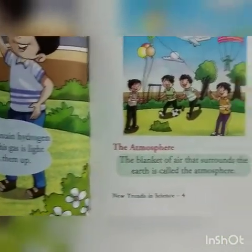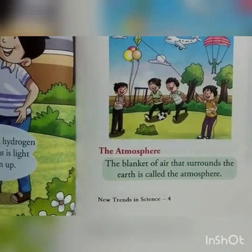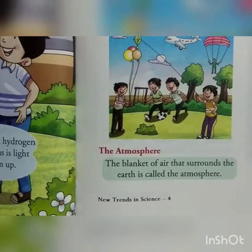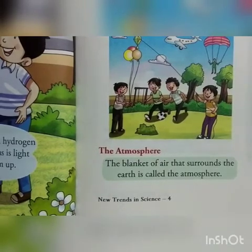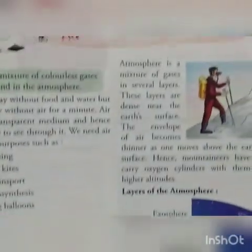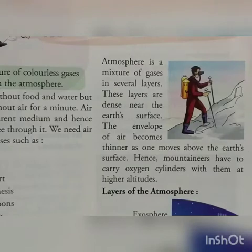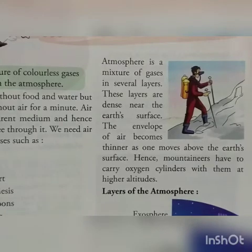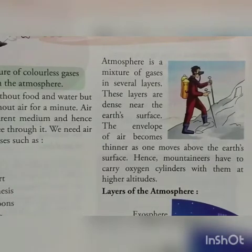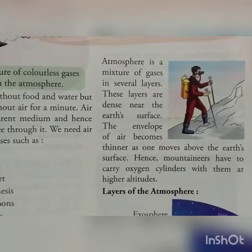Now let us discuss the atmosphere. The blanket of air that surrounds the earth is called the atmosphere. Atmosphere is a mixture of gases arranged in several layers. These layers are dense near the earth's surface. The envelope of air becomes thinner as one moves above the earth's surface. That is why mountaineers carry oxygen cylinders with them at higher altitudes.